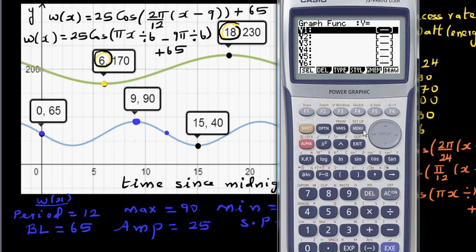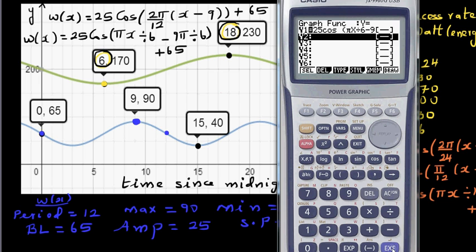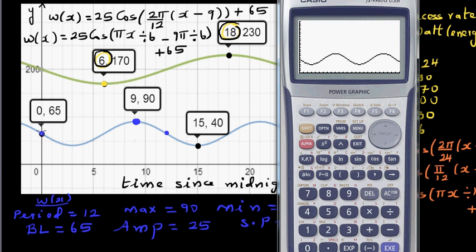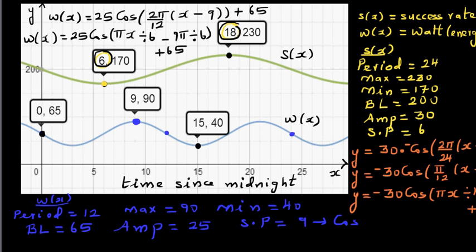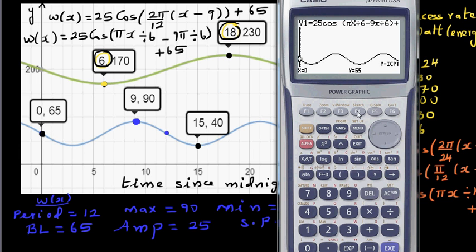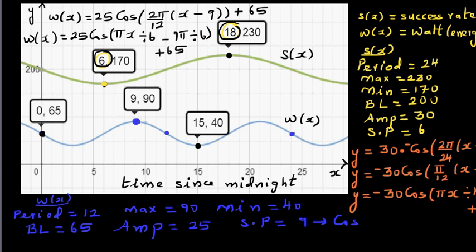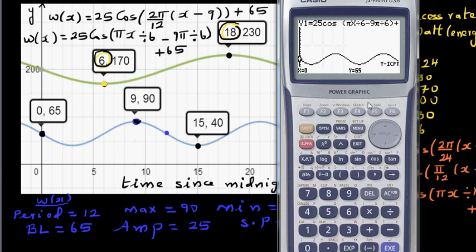Enter in the calculator: 25 cos bracket shift π x divided by 6 minus 9 shift π divided by 6, close bracket plus 65. Confirming: the y-intercept is 65, the maximum at 9 a.m. is 90, and the minimum at 3 p.m. (hour 15) is 40.